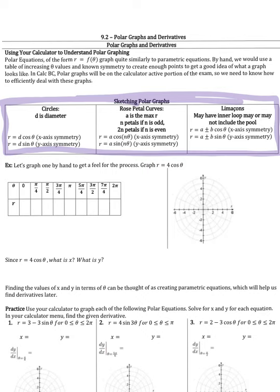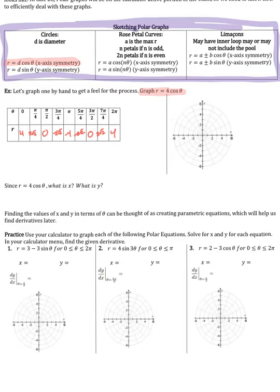Let's graph r = 4cosθ by hand. This is a circle with x-axis symmetry, meaning it can be folded along the x-axis and line up. Pause the video and fill in a table of values — 4·cos(0), 4·cos(π/4), 4·cos(π/2), etc. — using basic unit circle knowledge. Once you've filled in the table, plot those points, and your graph should look like a circle.